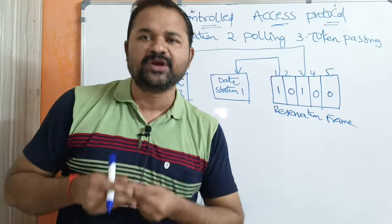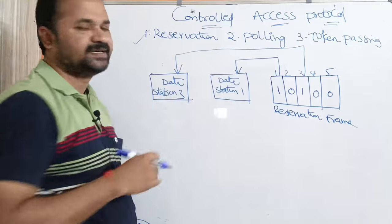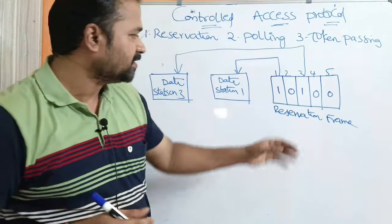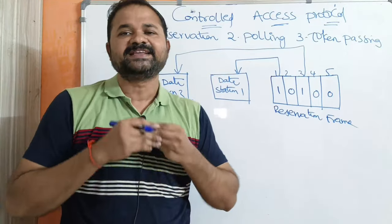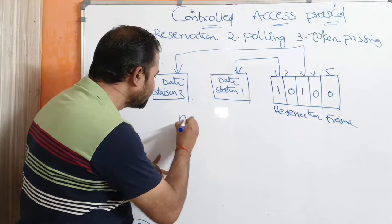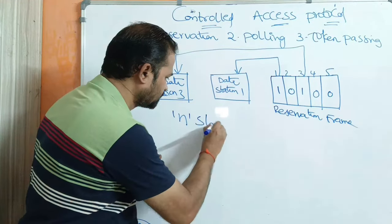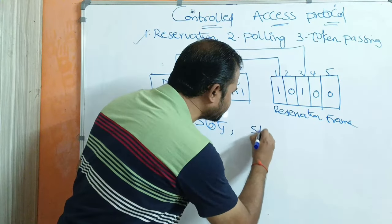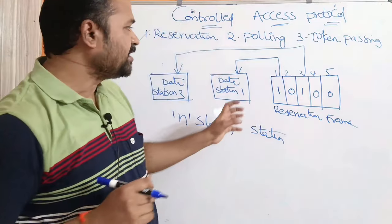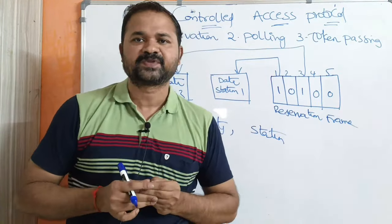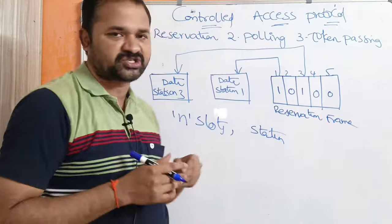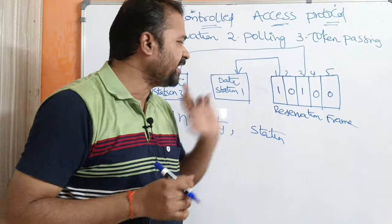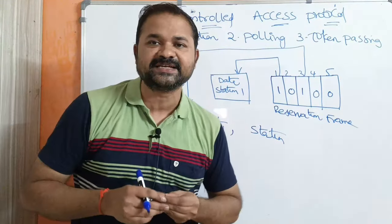In this video we are going to discuss about the first one, that is reservation. Here we will have a reservation frame. The reservation frame is divided into n slots where each slot represents a station. Here this is a reservation frame which contains totally five slots.